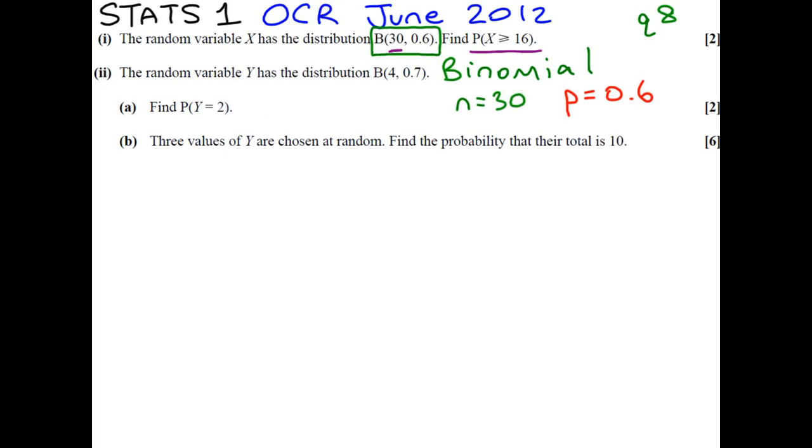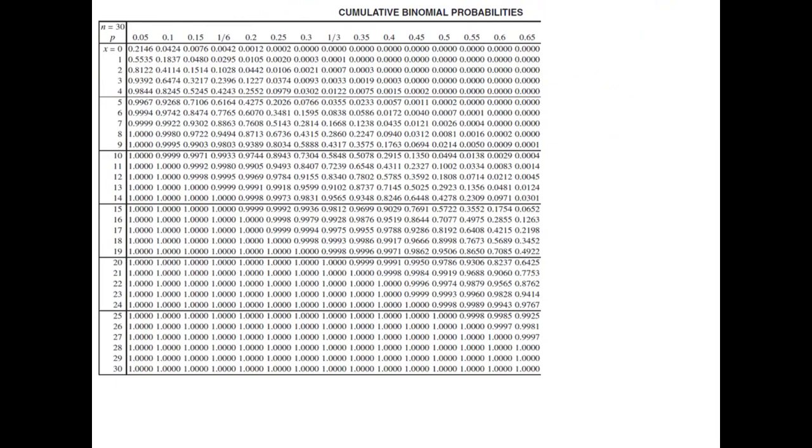We want to know the probability of getting 16 or more successes. Now immediately you should be thinking about the tables in your formula book, which are the cumulative binomial probability tables. I've pasted one in here. I've gone to a page where n is 30, so everything on this page is to do with a binomial distribution with 30 trials. If your exam question is asking you to do it from a table, it's going to have to be one of these probabilities, and you will notice that 0.6 is shown there.